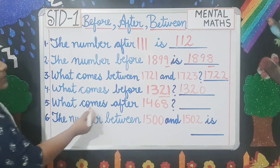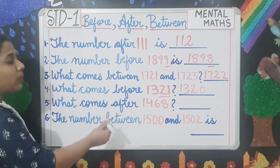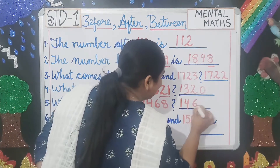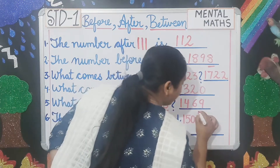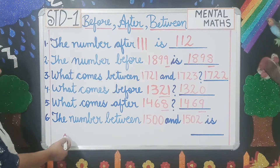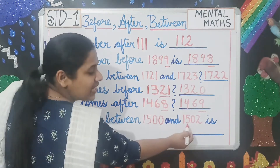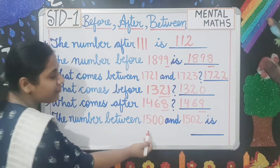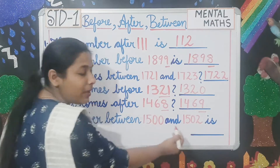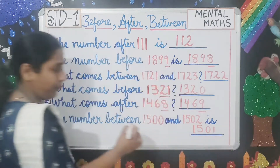What comes after 1468? After — you do forward counting, so it will be 1469; after 8 comes 9, so this digit is changing. Next question: the number between 1500 and 1502 — the number between these two is 1501. Clear students?